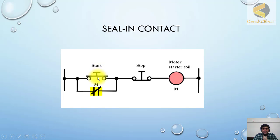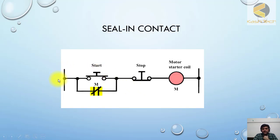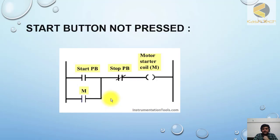Let's see the example: now I have pressed the start button, M is energized. If M is energized, this contact becomes closed. Once this contact is closed, even if I release the start button, the DC circuit path is maintained through this contact and it keeps energizing. So this contact is called the seal-in contact, this circuit is called a latching circuit, and the relay we are using for the latch can be called a latch relay. The contact we are using is called the seal-in contact.